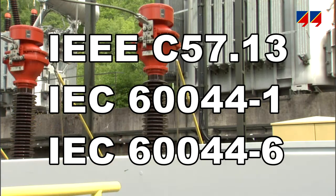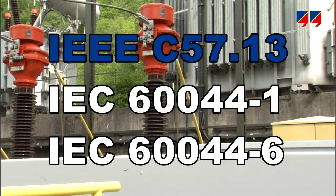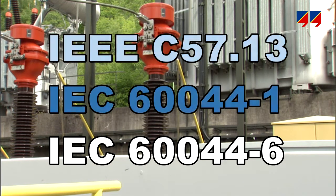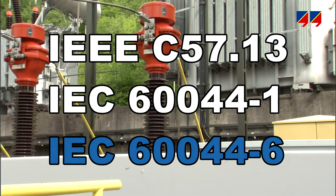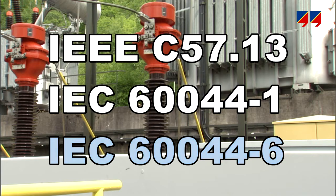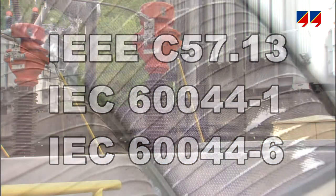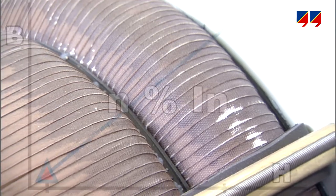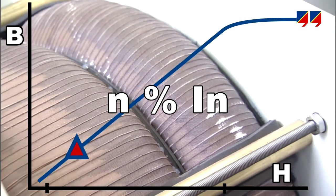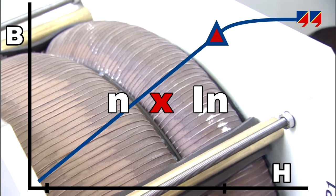International standards such as IEEE C57.13 and IEC 644-1 and 6 describe class characteristics of protection and metering CTs. Protection CTs have to transform currents from a few percent of nominal current up to many times its value during fault conditions.